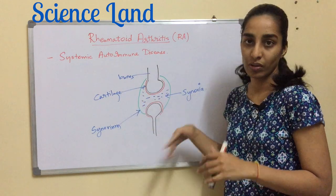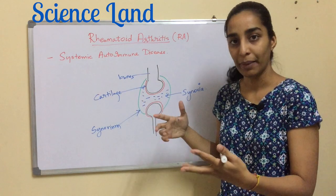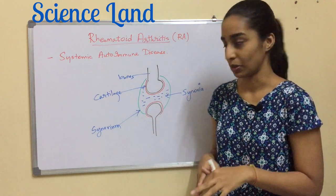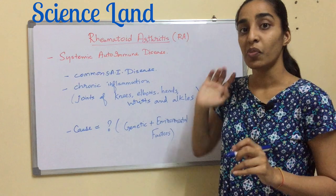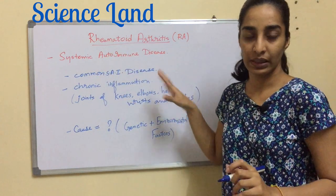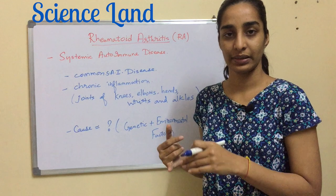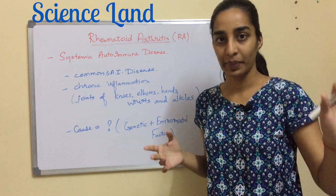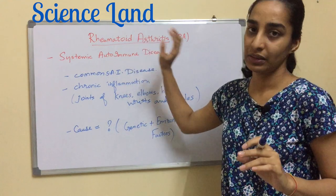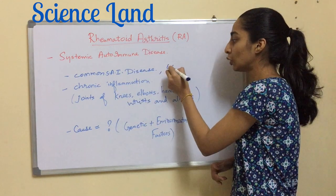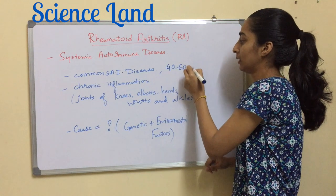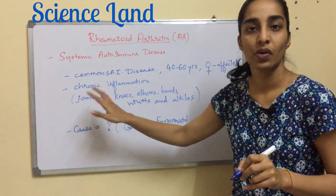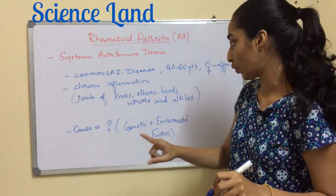That is the normal picture of an elbow. RA is the most common systemic autoimmune disease — there are others like MS (multiple sclerosis) and SLE, which I'll discuss later. This disease occurs usually within a specific age bracket, and women are more affected. There is chronic inflammation of the joints, including joints of the knees, elbows, hands, wrists, and ankles.